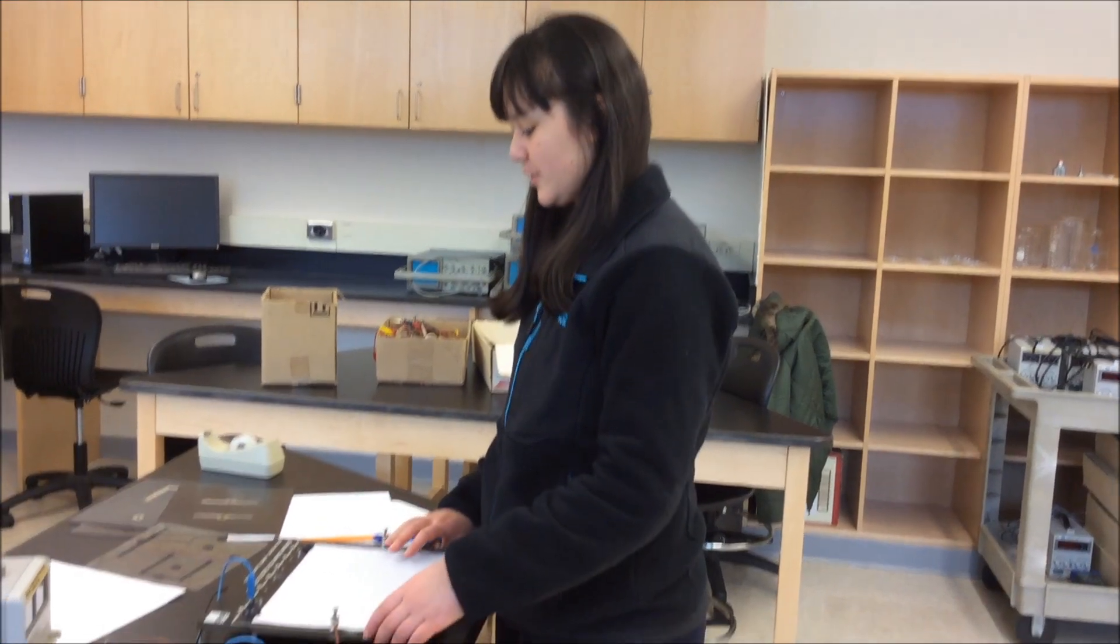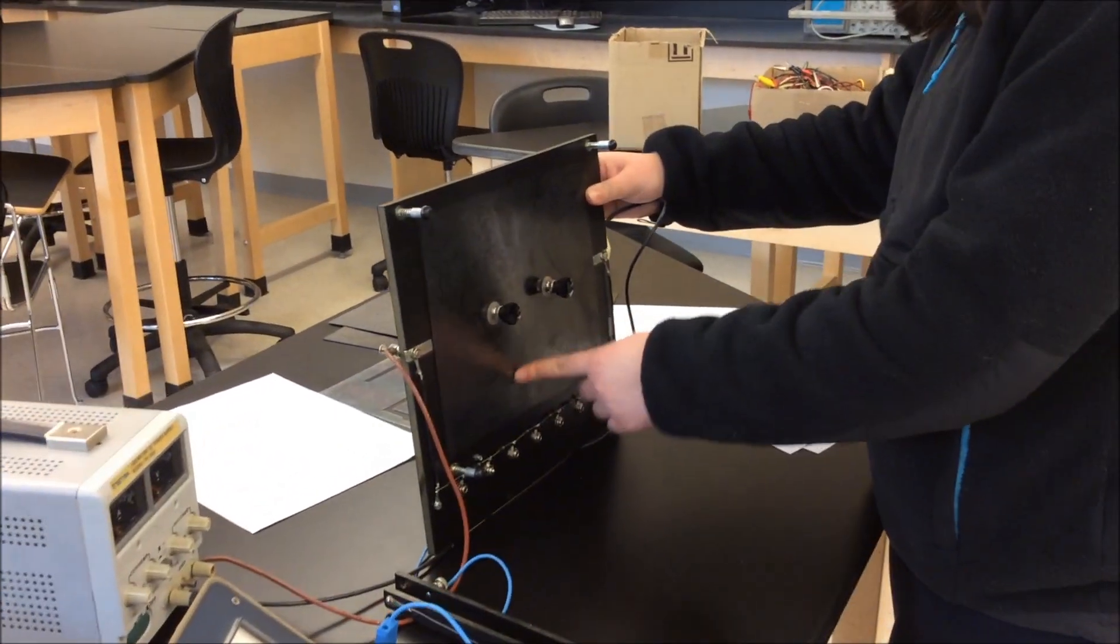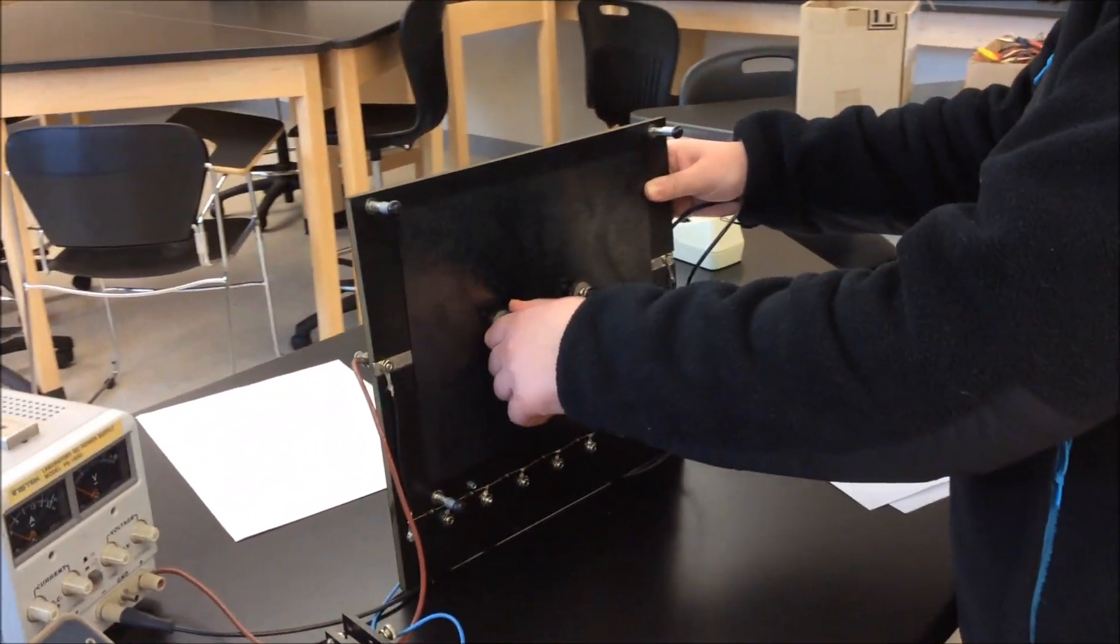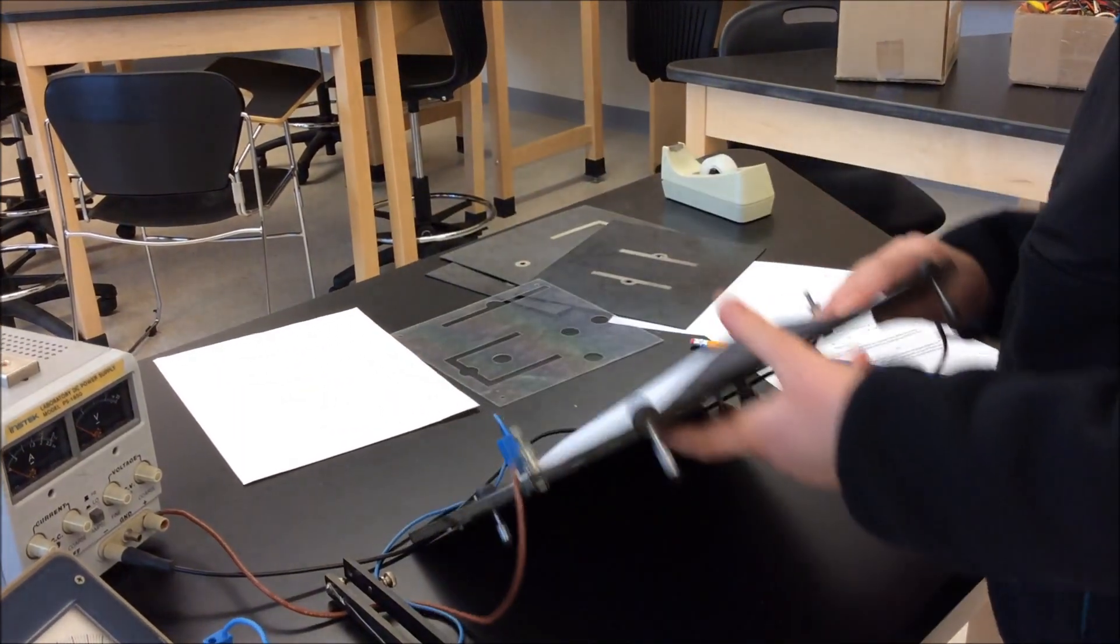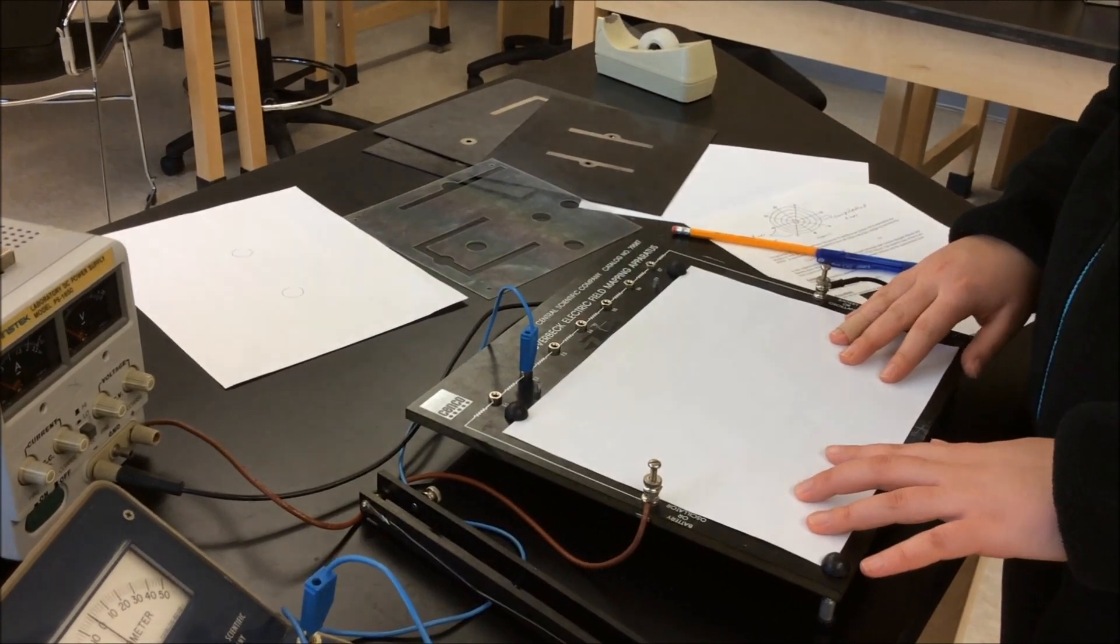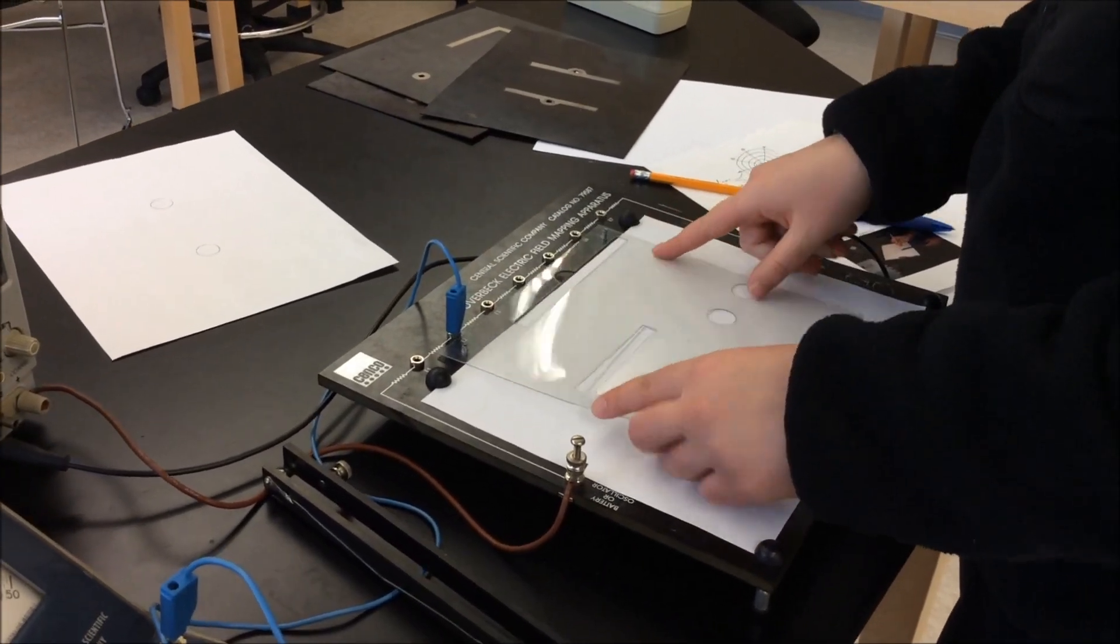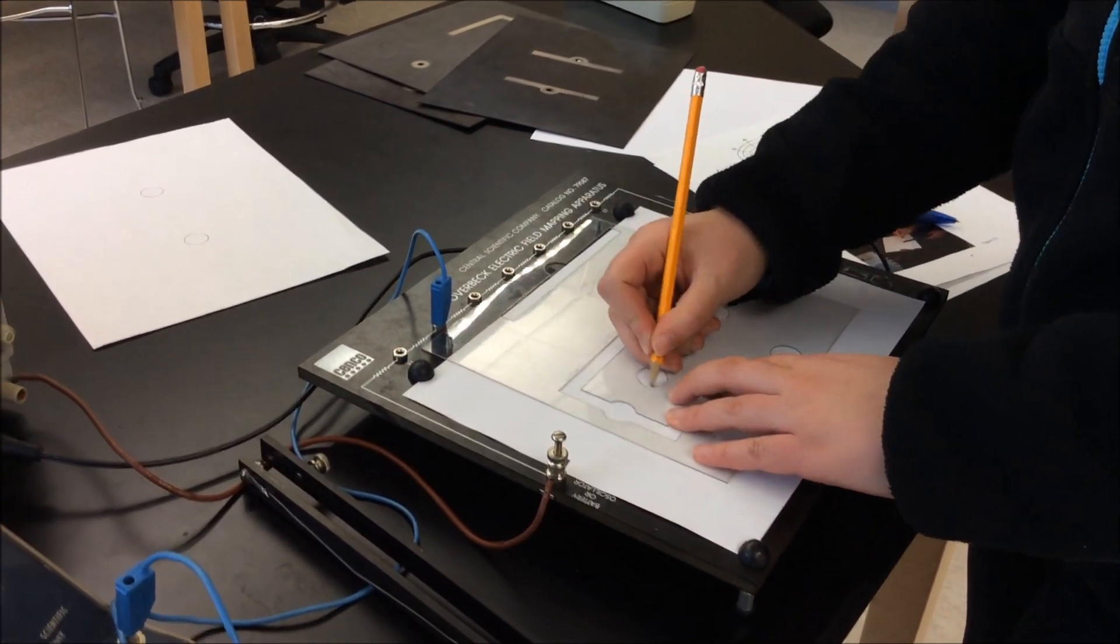The first thing that you're going to do is flip over the mapping apparatus and place an electrode sheet shiny side up underneath and secure it using knobs. After you do that, you're going to flip it back over and place a piece of paper on top of it. Then you're going to trace the shape of the electrodes that you saw on the bottom.